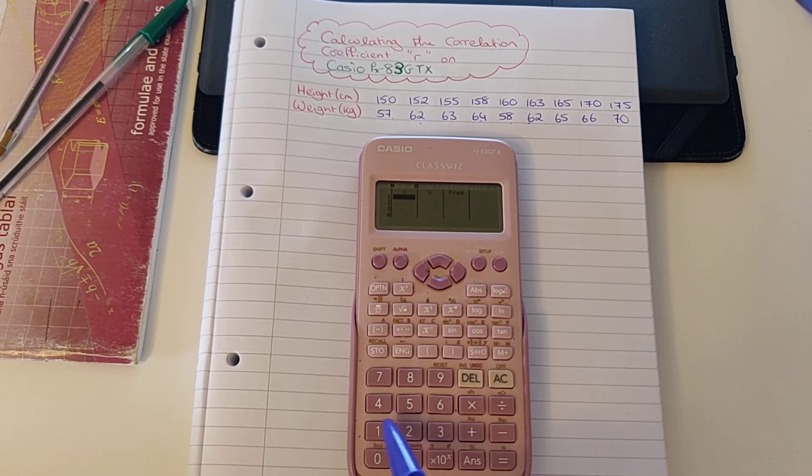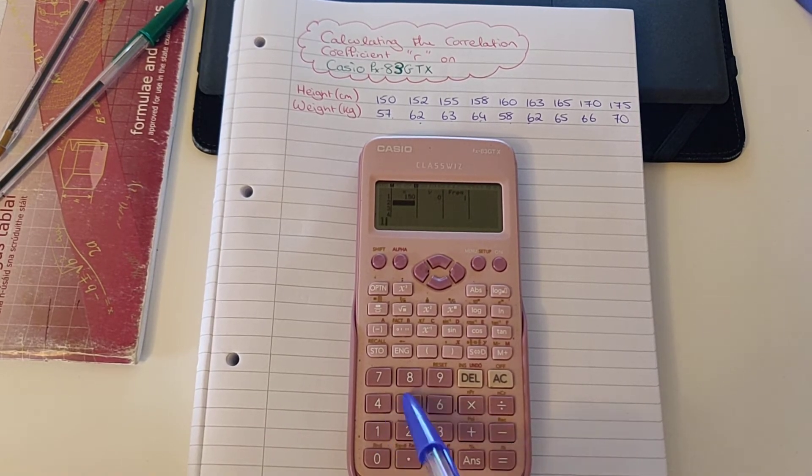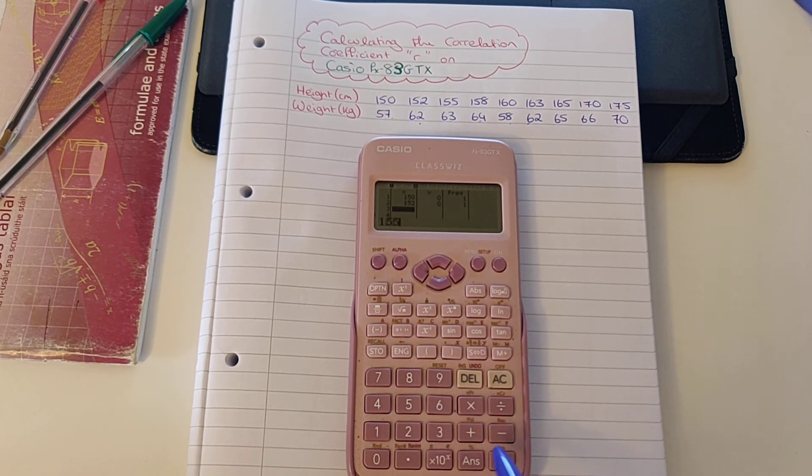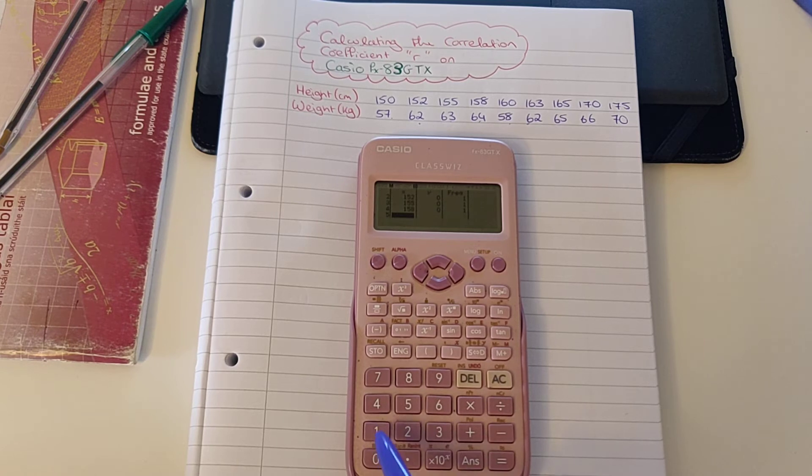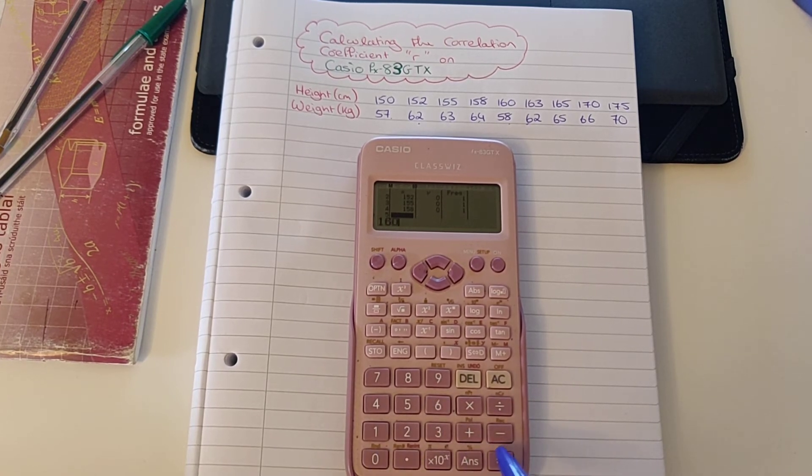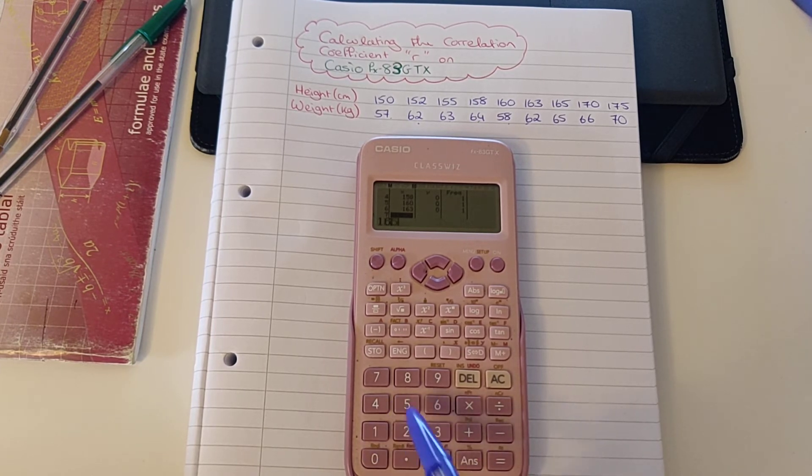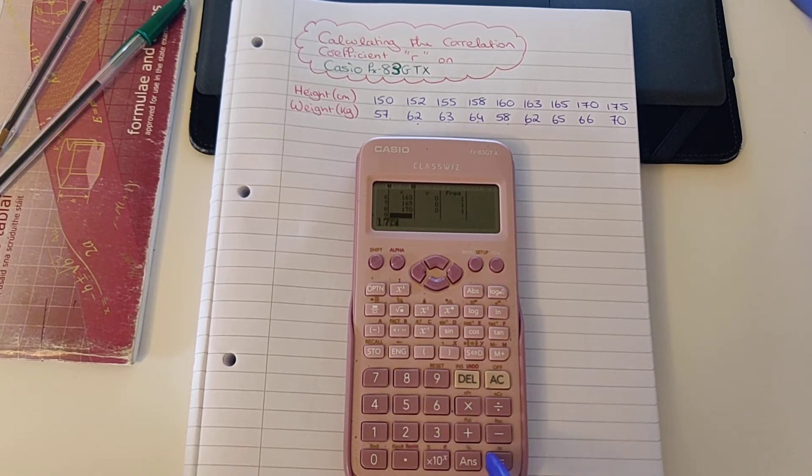So we're going to type those in now into our x column. We have 150 as our first height, we type that in and press equals to move down the column. Then we enter 152, 155, 158, 160, 163, 165, 170, and 175, pressing equals after each. So I can see I've used nine different values here, which I would then check.